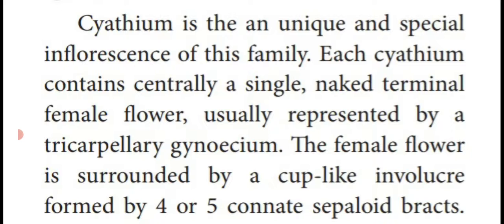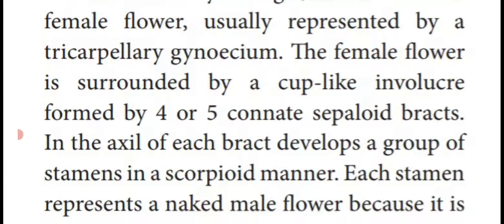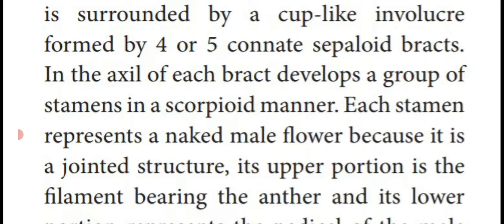You already studied cyathium inflorescence in reproductive morphology. This special type of inflorescence is known as cyathium. It contains a single naked terminal female flower at the center, represented by a tricarpellary gynoecium. The female flower is surrounded by a cup-like structure or involucre, formed by four or five connate sepaloid bracts. In the axil of each bract, a group of stamens — representing male flowers — develops in a scorpioid cyme manner.